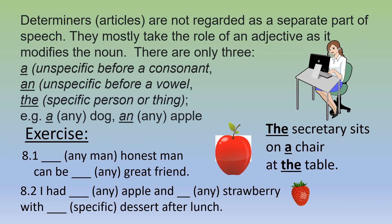Determiners or articles are not regarded as a separate part of speech. They mostly take the role of an adjective as they modify the noun. There are only three: 'a' — unspecific, before a consonant; 'an' — unspecific, before a vowel; 'the' — specific person or thing, whether it starts with a consonant or a vowel. For example, a dog or an apple. Exercise: any man, an honest man, can be a great friend. I had an apple and a strawberry with a specific dessert after lunch. The secretary sits on a chair at the table.